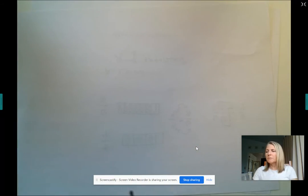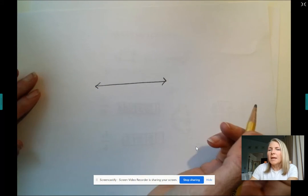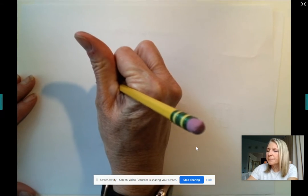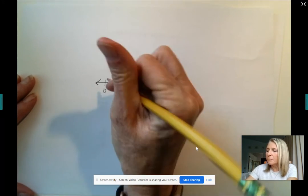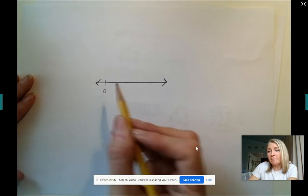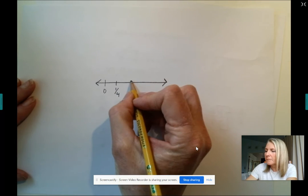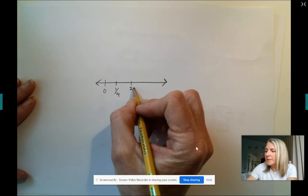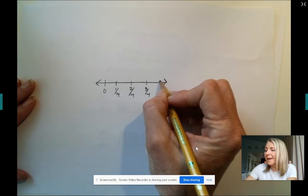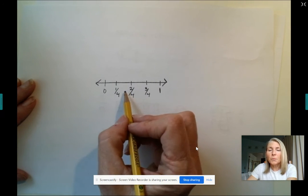Just as a quick review though, if you were to take a number line, and let's say I wanted to partition this into fourths, I could have zero right here because I have nothing. And then I could put one-fourth here, two-fourths here, three-fourths here, and then here is my one whole, or four-fourths.